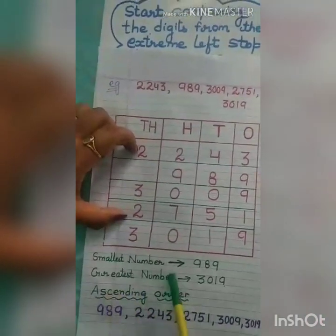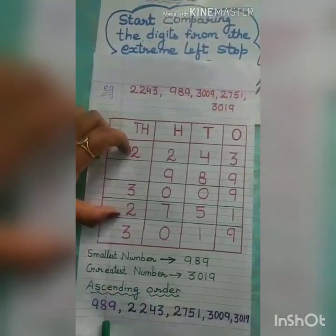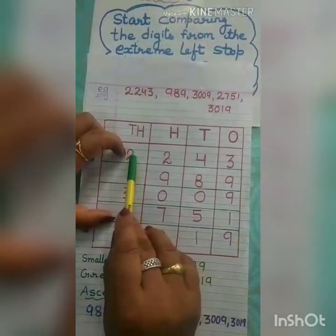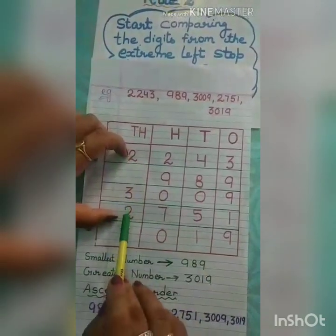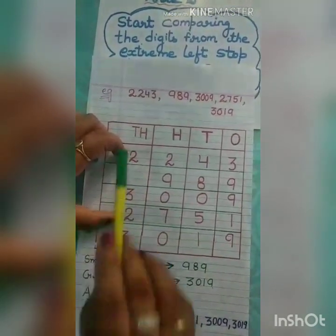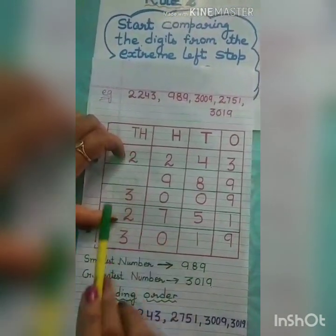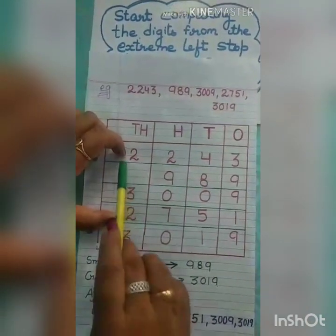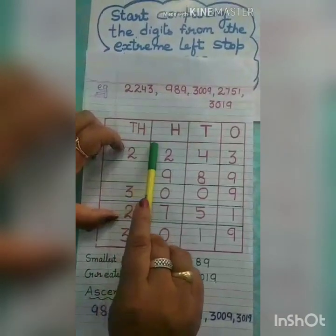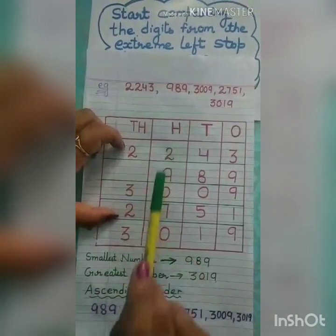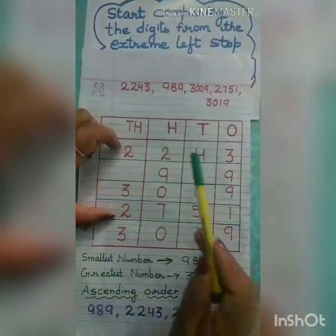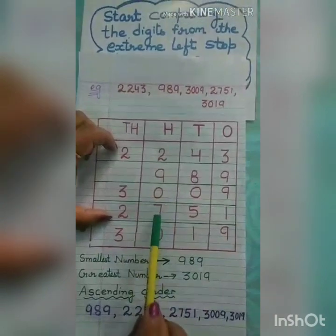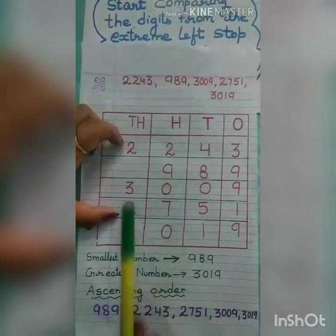The smallest number so far is 989. Now we compare the two numbers starting with 2. Their thousands place is the same, so we move to their hundreds place.